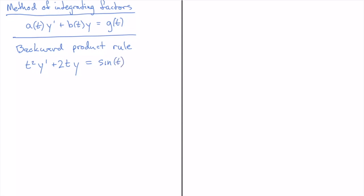This equation has a special feature: the left-hand side is of the form where a(t) = t² and b(t) = 2t, in the language of the general equation above. I'll point out that a'(t) is exactly b(t). That's an important relationship, because when we write that down, we have a·y' + a'·y = sin(t).